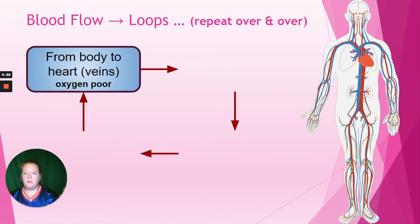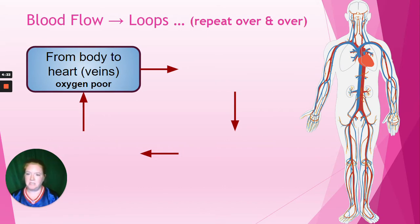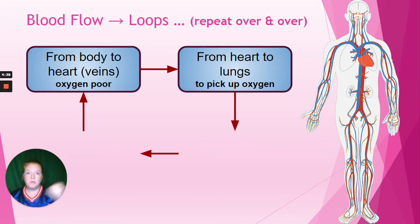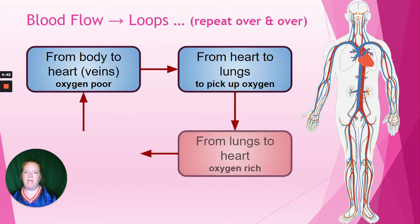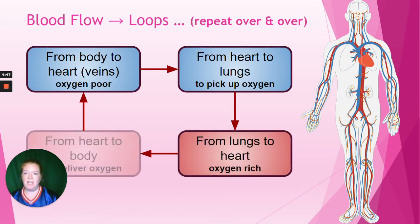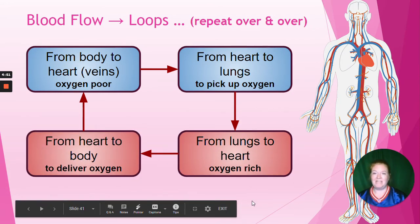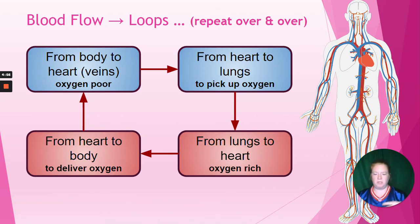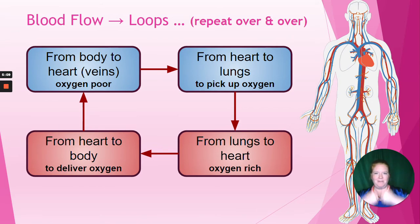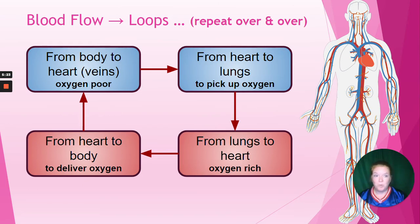So how does the blood actually flow? The blood goes from the body to the heart through veins and it's oxygen-poor. Then it goes from the heart to the lungs in order to pick up oxygen. Then it goes from the lungs back to the heart, now full of oxygen. And then from the heart to the whole body to deliver the oxygen. So the cycle is: body to heart, heart to lungs, lungs to heart, heart to the whole body - over and over again.